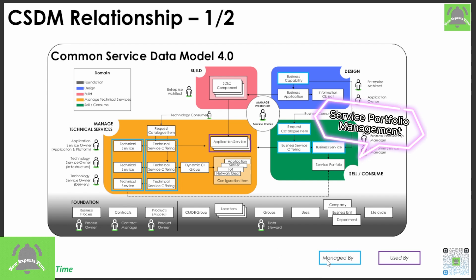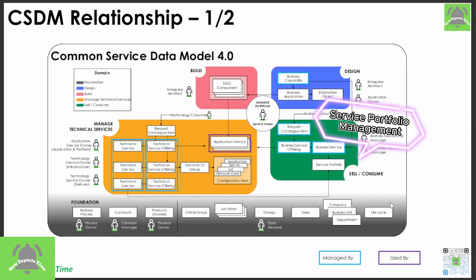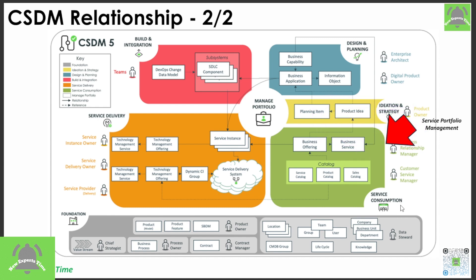You can also see 'Managed By' and 'Used By' differentiations — these are managed by Application Services, Technical Services, and Technical Offering, which have a relationship with Business Services. We are mainly focusing on Business Services in Service Portfolio Management and Digital Portfolio Management. The second diagrammatic representation is CSDM version 5, which also clearly highlights it as 'Service Consumption' — and in Service Consumption, Business Services and Business Service Offering are clearly highlighted. Implementing this solution means you are completely aligning to the CSDM framework as well.